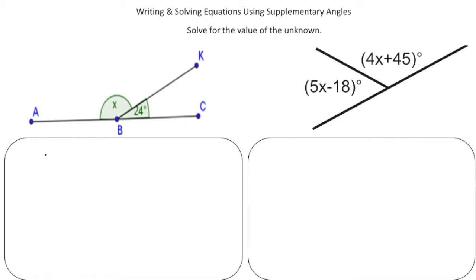Let's write the equation as x + 24 = 180 degrees. Now we just solve for x, right? Take away 24 from both sides.